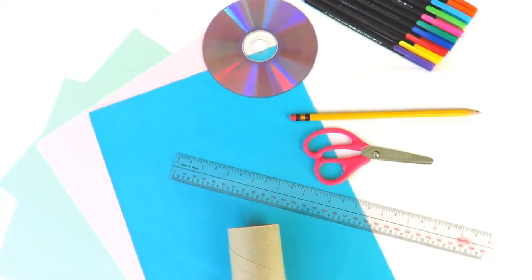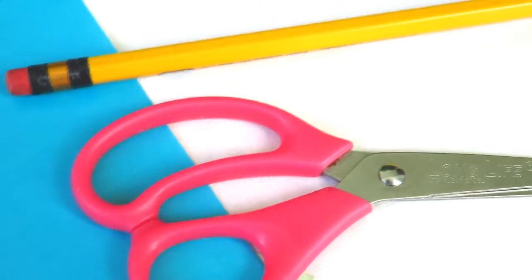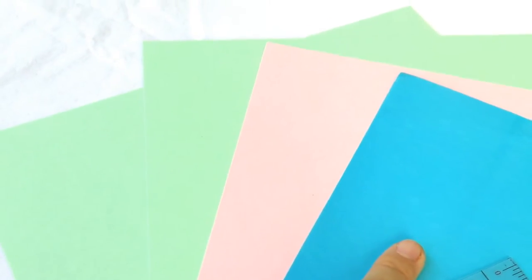For this DIY, grab all your crafty things because you will need a ruler, a pencil and scissors, colored hard paper. I used two green ones to represent Christmas, pink for Valentine's, and blue for any random occasion.